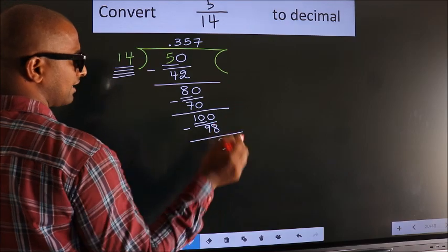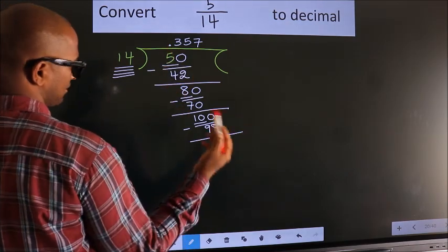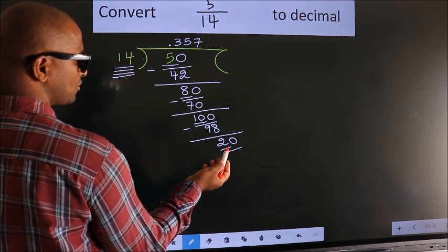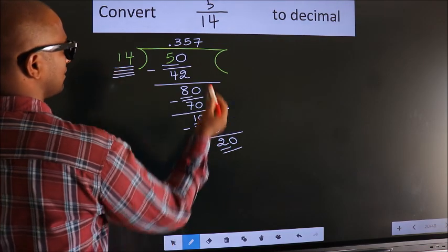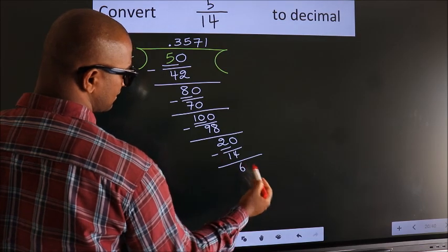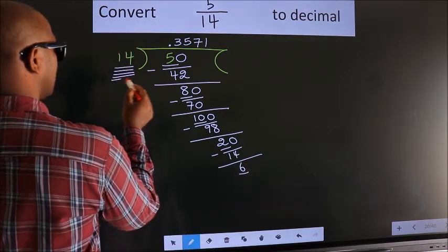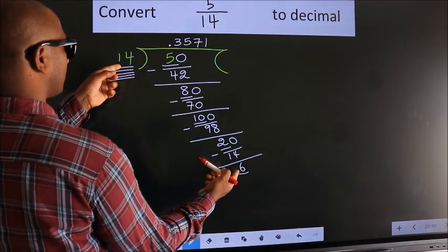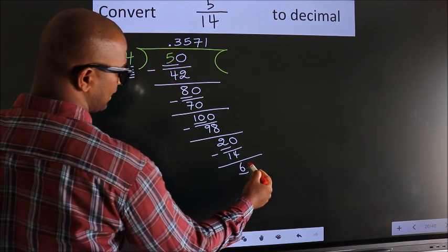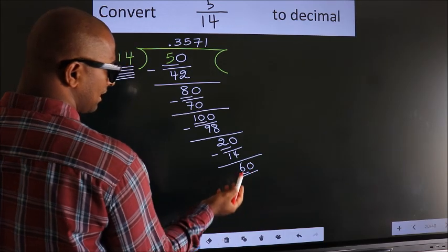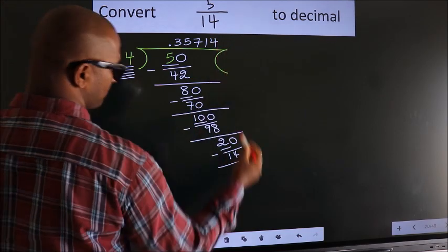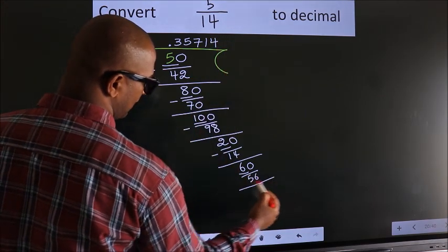We have 2 here; 2 is smaller than 14 and we already have the decimal, so we can directly take 0, making it 20. A number close to 20 in the 14 table is 14 once, which is 14. We subtract to get 6. Now we have 6 here; 6 is smaller than 14, so we take 0 to get 60. A number close to 60 in the 14 table is 14 fours, which is 56.